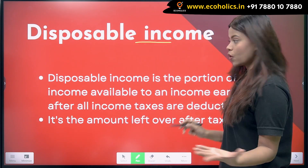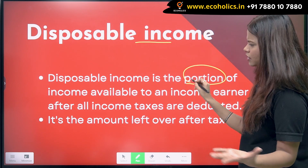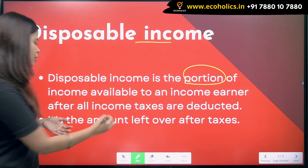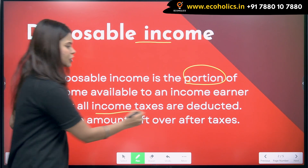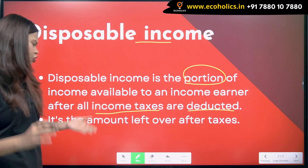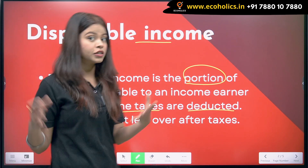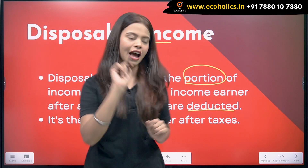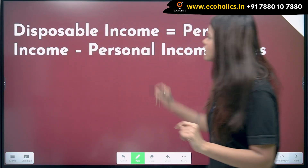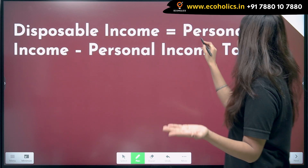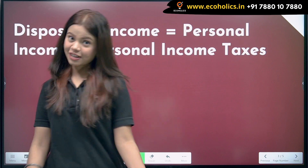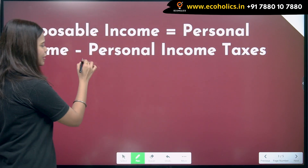Disposable income is the portion of income available to an income earner after all the income taxes are deducted. In short, it's the amount left after taxes. Disposable income equals your personal income minus personal income tax.